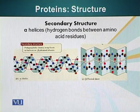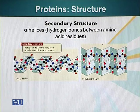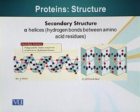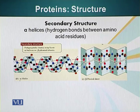This type of bonding is important in the formation of secondary structures. There are two types of secondary structures: alpha helices and beta sheets. Alpha helices are present in fibrous proteins. They result from the formation of hydrogen bonds between the hydrogen atom attached to the nitrogen atom in the peptide bond and the oxygen atom attached to the carbon atom.